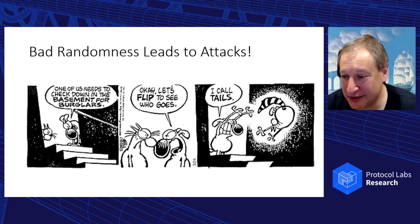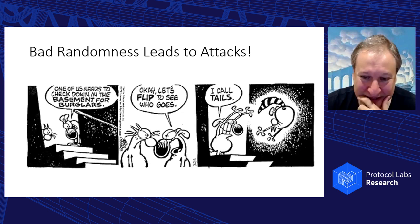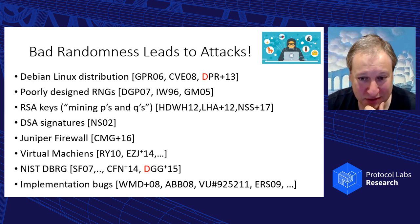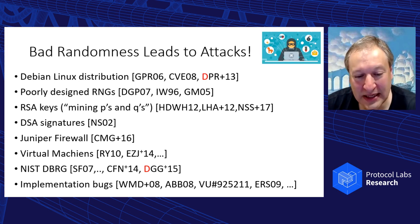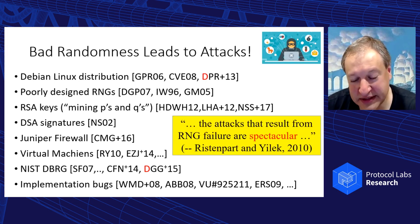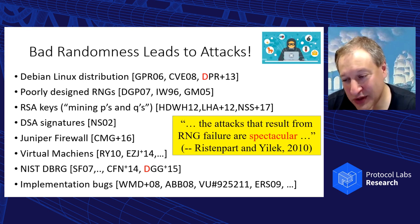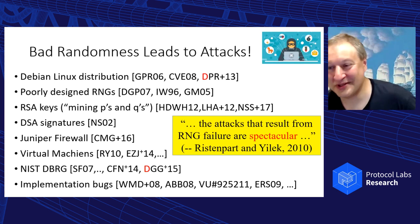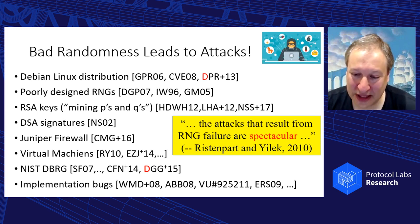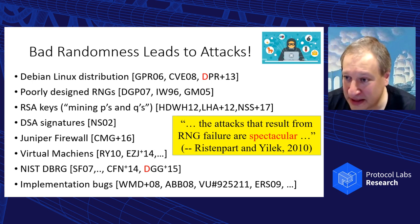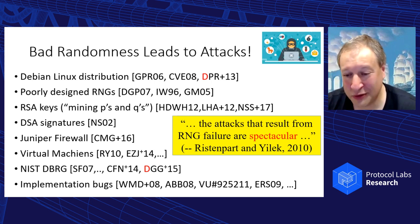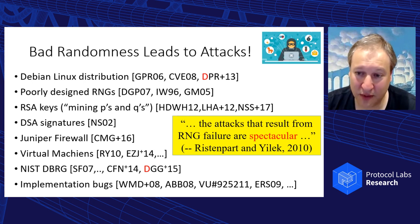Bad randomness can lead to attacks. I'm listing a very incomplete set of attacks — I was even involved in some attacks involving bad randomness. The summary is: it's not easy to attack an RNG, but when attacks are possible, the failures are really spectacular. You can recover the entire secret key, snoop on conversations, listen everywhere. We're talking about complete breaks of the system, not just tiny theoretical advantages. So we definitely want to get it right.